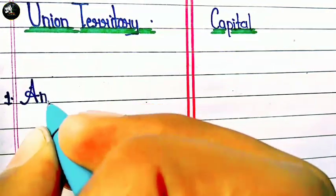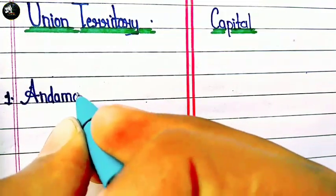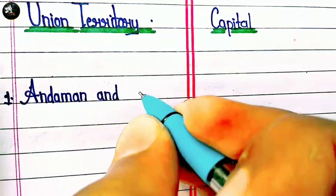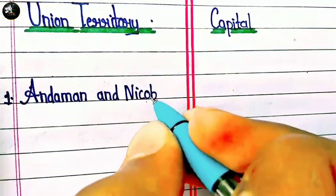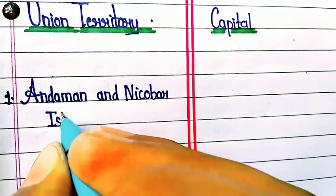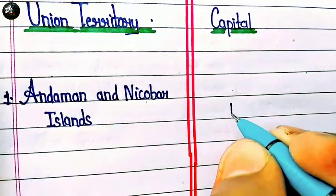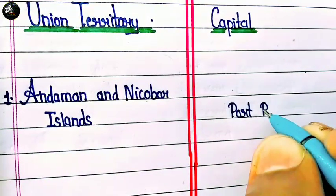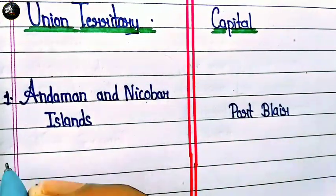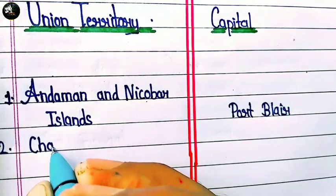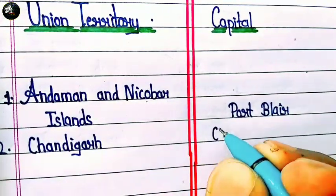Now we are moving to Union Territory states. The first is Andaman and Nicobar Island and their capital is Port Blair. Next is Chandigarh and the capital is Chandigarh.